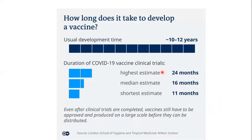This process generally takes 10 to 12 years. However, the COVID-19 vaccine was developed within a very short period. According to the London School of Hygiene and Tropical Medicine, the highest estimate was 24 months and the shortest was 11 months — and indeed the COVID-19 vaccine finished all clinical trials within the shortest estimated period and came to market very quickly. Advances in biotechnology, molecular biology, and high-throughput equipment made this possible.